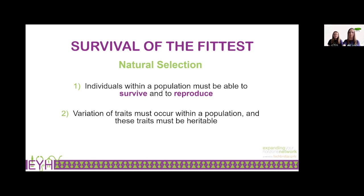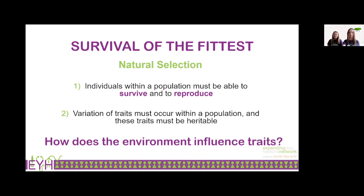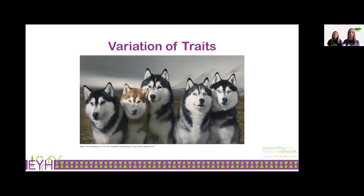So how does the environment influence traits? This is really what we're going to be discussing today. Before we move forward, I want to discuss in a little more detail the terms variation of traits and what it means for them to be heritable. Here you can see a group of husky dogs — for this presentation, we'll call this group a population. You'll notice some individuals have distinct characteristics such as blue eyes or brown eyes, dark fur or blonde fur, but they are all very easily identifiable as a husky. This is a perfect example of how variation can occur within a population. In this case, traits are artificially selected through selective breeding rather than natural selection, but it's a very similar concept.